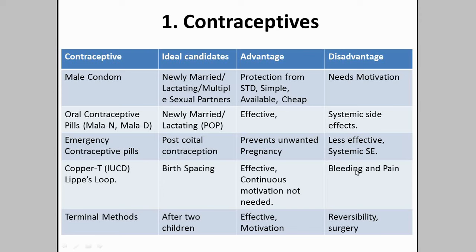Male condom — female condom, diaphragm, and cervical cap are not covered here. The male condom is ideal for newly married couples, lactating women, and those with multiple sexual partners. The advantage is protection from STDs; it is simple, available, and cheap. The disadvantage is that it needs motivation during sex, which is not required for other forms of contraceptives. Now moving on to oral contraceptive pills.